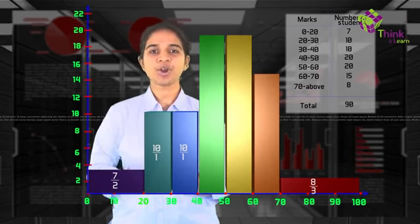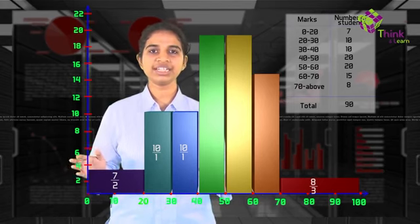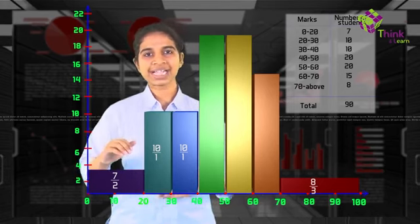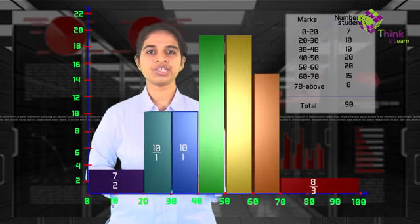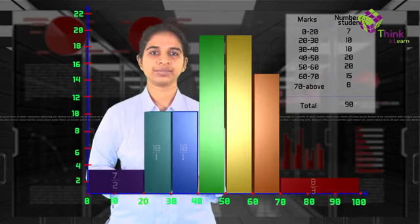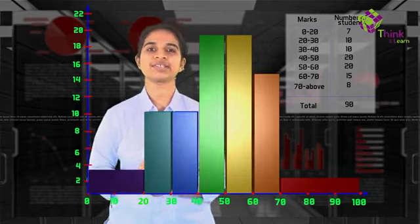Very easy to plot when all the class intervals are equal. When all the class intervals are equal, the y-axis is nothing but directly the frequency. When they are not equal, you need to adjust for the width. Because area represents number of students.